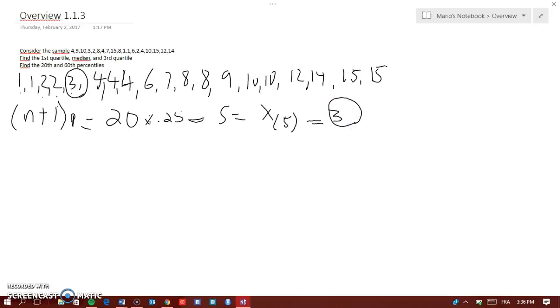Your median, which is the middle one, it should be n plus 1 times p, which is equal to 20 times 0.5. And that will equal to 10, which actually means the x subscript 10. Now, this is 5, so that's 6, 7, 8, 9, and 10, so 10 will be 7. So, your median is 7.